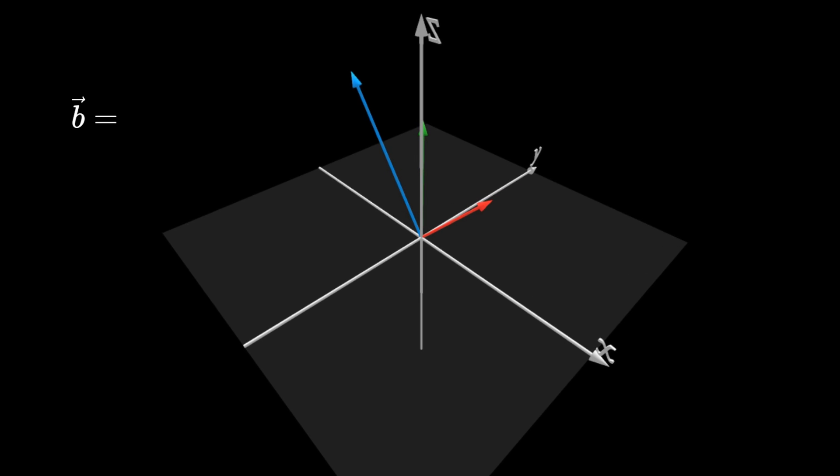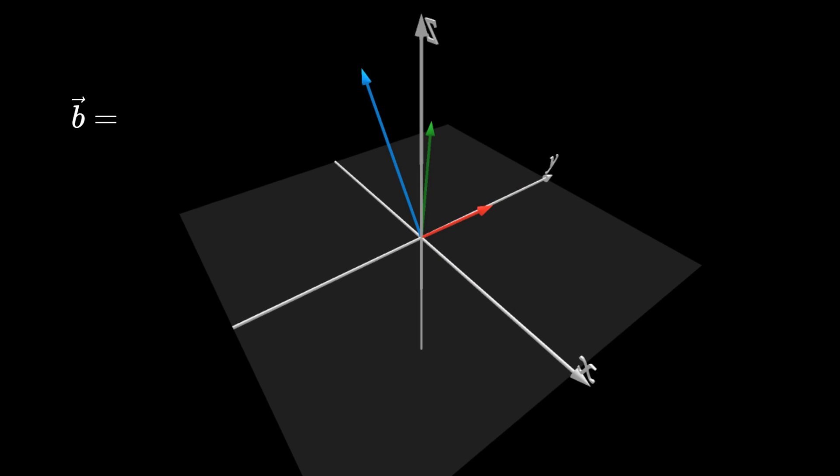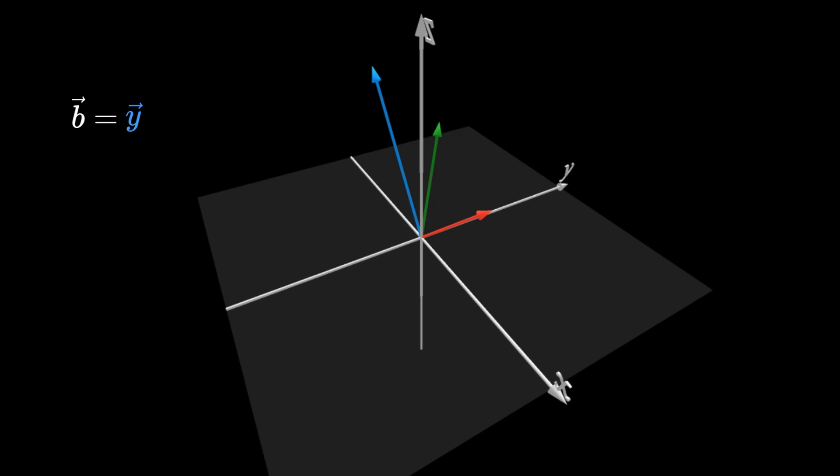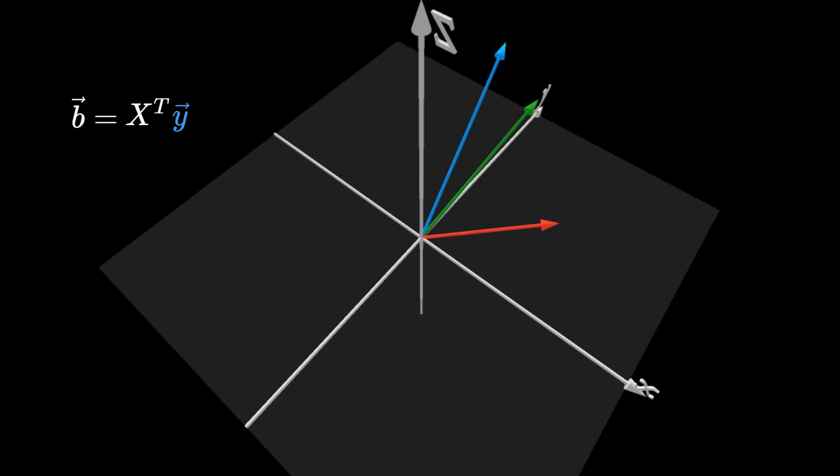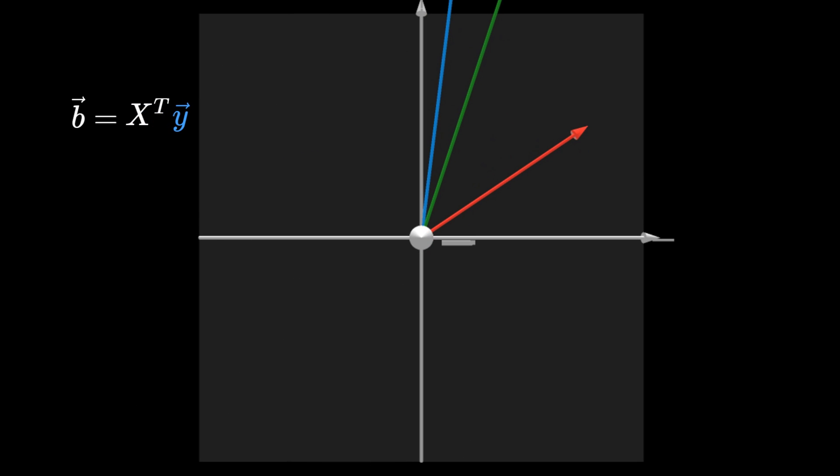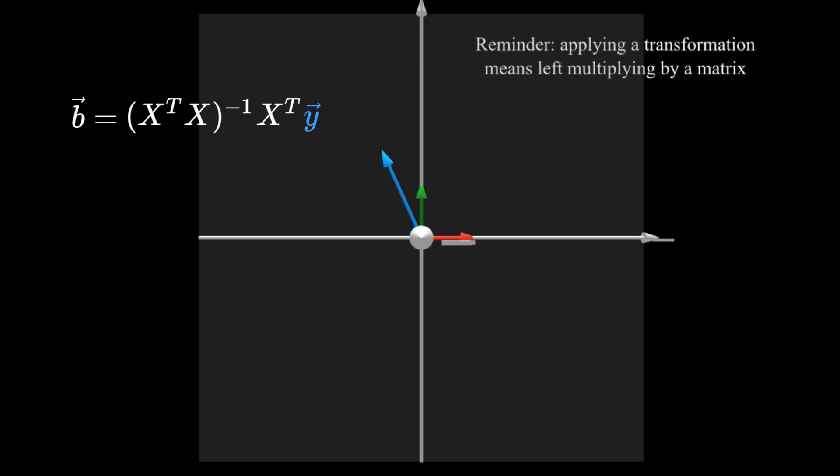We can go through this formula with the same visualization as before. First, we have a blue vector Y in 3D space. Then, we apply the transformation X transpose to map it into 2D space. And finally, applying the transformation X transpose X inverse gives us the result.